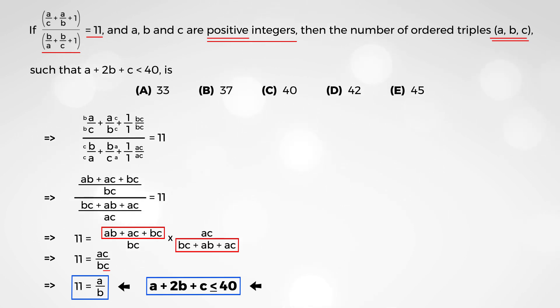And, of course, emphasis on the fact that all three a, b, and c are positive integers. So, let's work with that. Our first one, of course, is that 11 is equal to a over b.